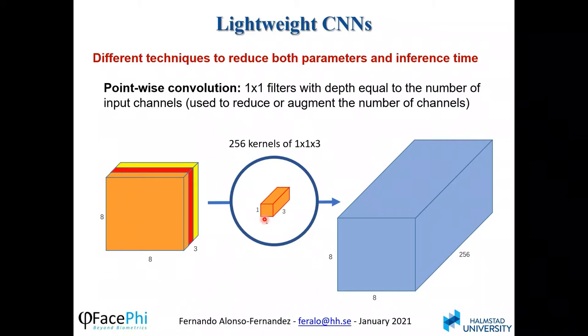In this example, we increase the number of channels from 3 to 256, but it could be the opposite — we may want to reduce the channels that we have at the input.